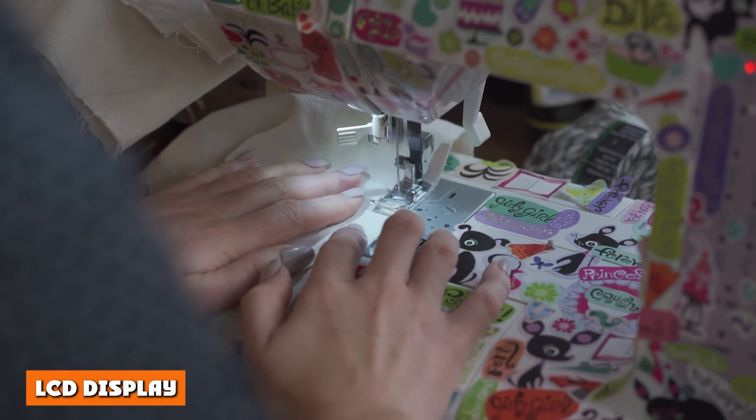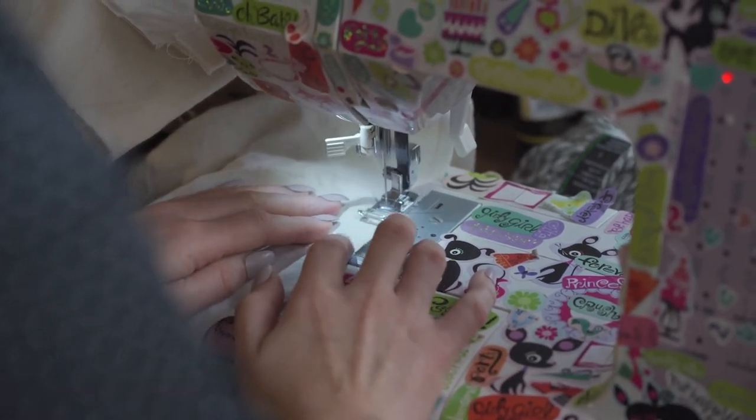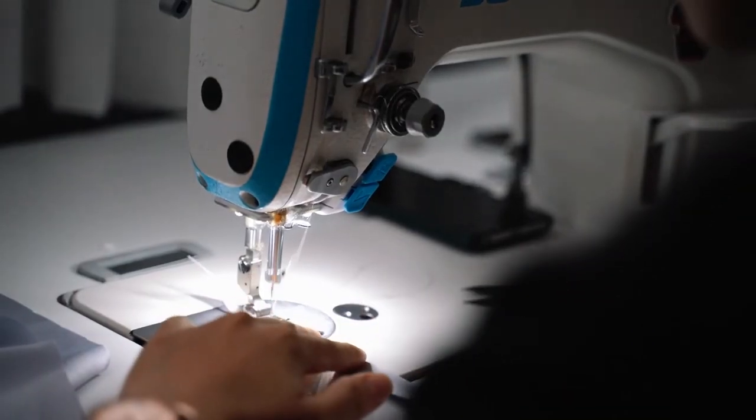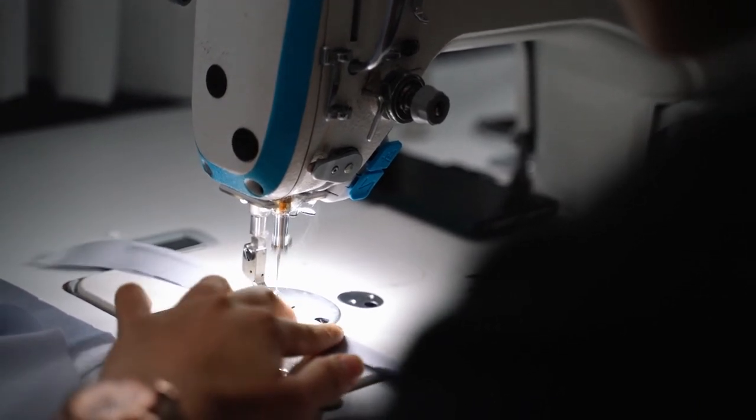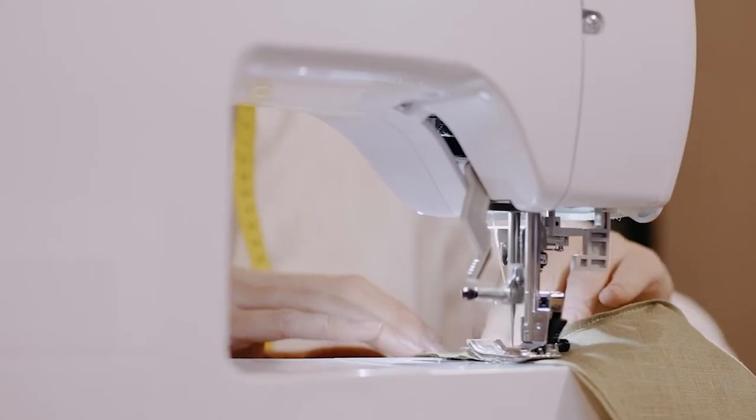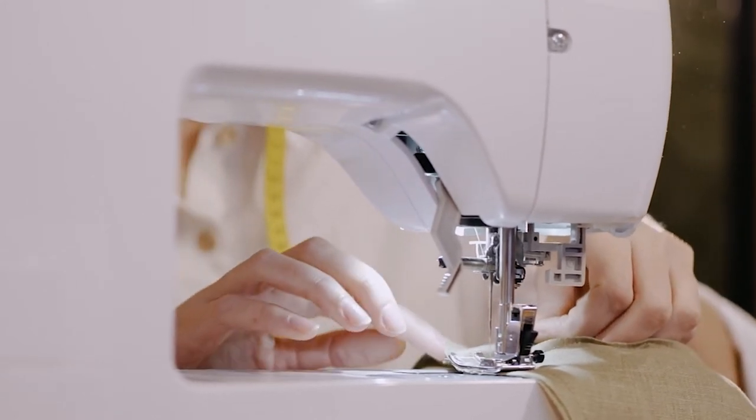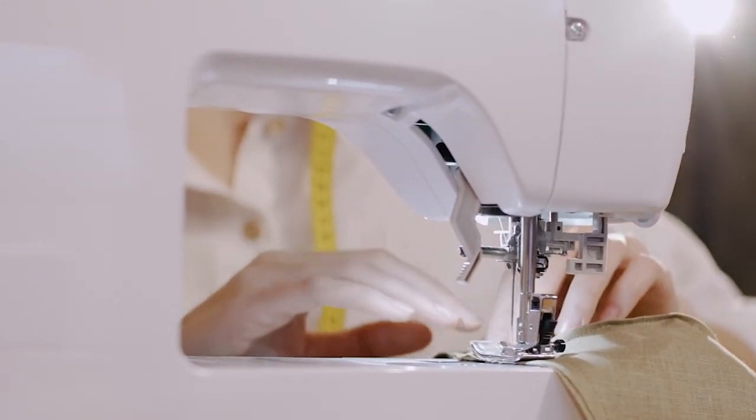Since this is a computerized sewing machine, it features an LCD screen. From here, you can pick your stitches, adjust their length and width, and cycle through other options. You need only use the buttons and arrows next to the display screen to scroll, halting once you've found the perfect fit.